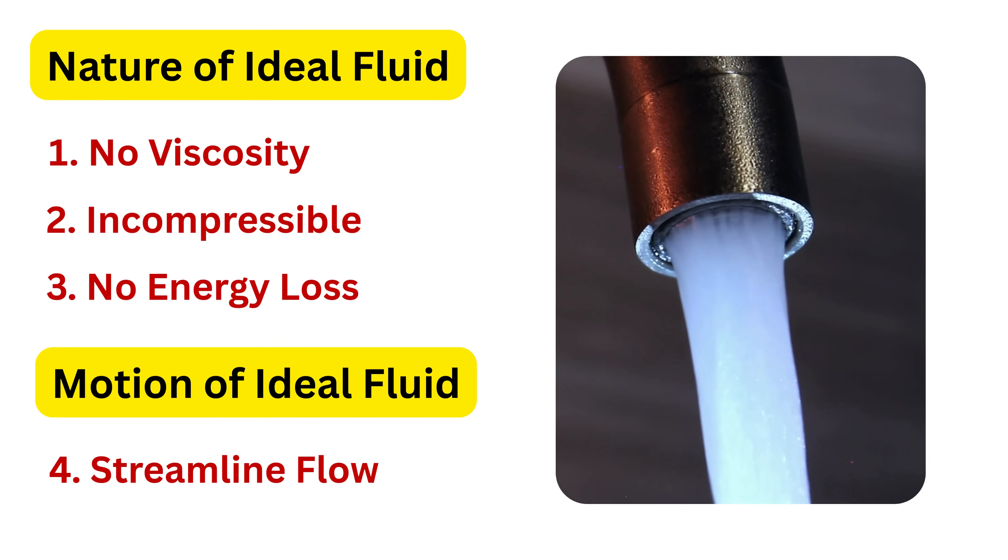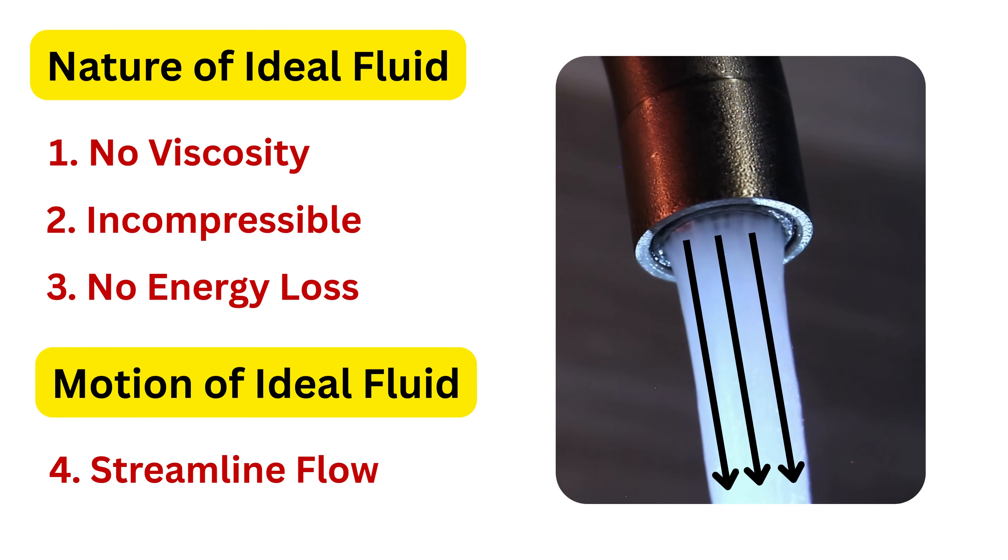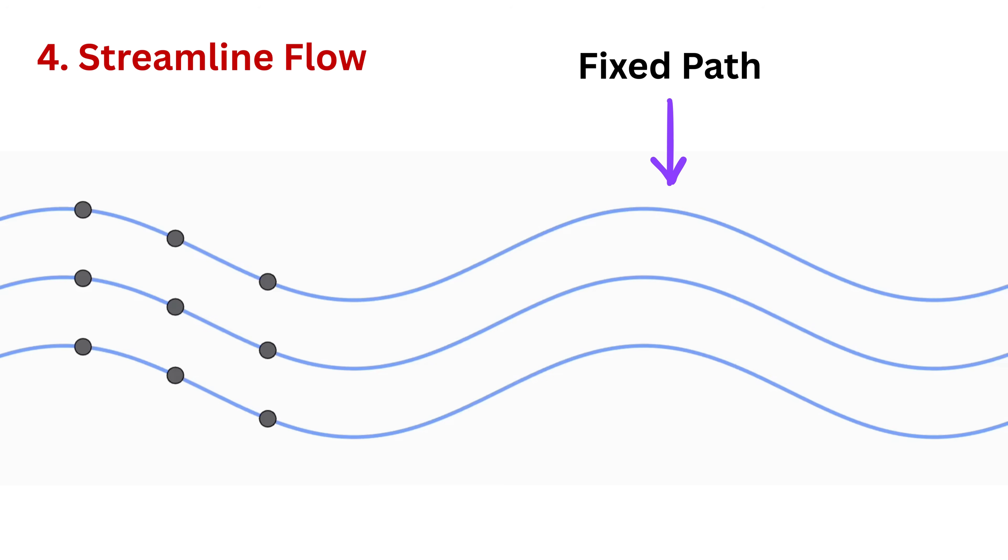Streamline flow is an assumption about the motion of the fluid, not about its material properties. It means that fluid particles move along smooth and well-defined paths without crossing each other, mixing randomly, or showing chaotic motion. The flow pattern is stable and predictable.